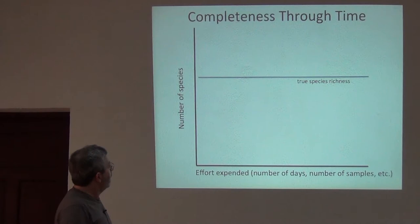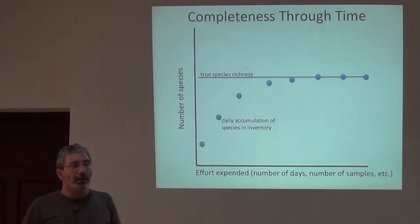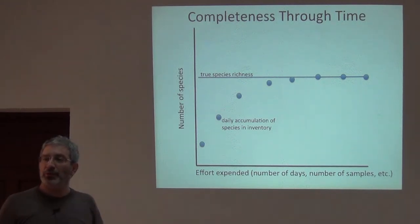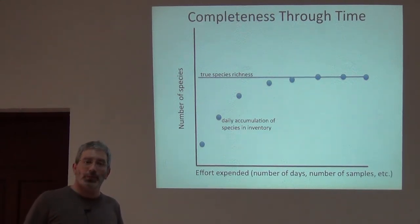So here's the idea. There's our true species richness. And we do our inventory and we accumulate these records through time, just like we looked at the first part of the morning. And what you can see is first day, second day, third day, we're adding tons of species. Starts to level off by the fourth day. And then from there on, fifth day we still get a few new species, sixth day we get a few new species, seventh and eighth days nothing new.